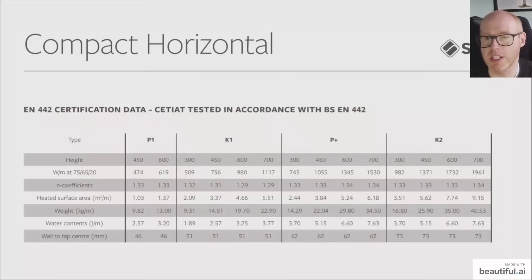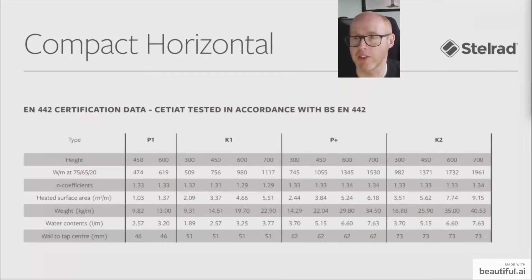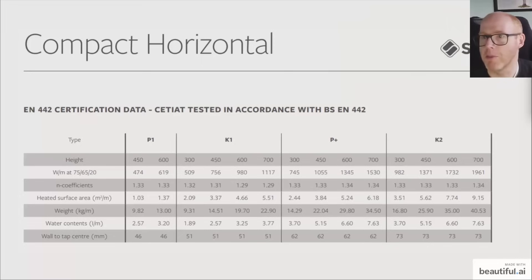This is a little table from Stelrad, a big manufacturer that lots of people will be familiar with. You can look up other charts, but this shows you that per metre of a single panel radiator, or per metre for a two panel radiator, you can see if it's 600 millimetres high, standard height, then it's 6.6 litres of water that goes into a one metre wide by 600 metre tall radiator.